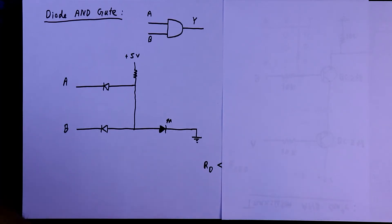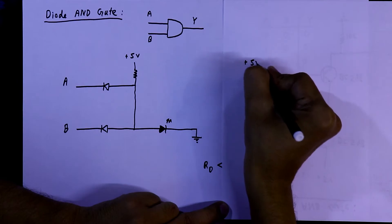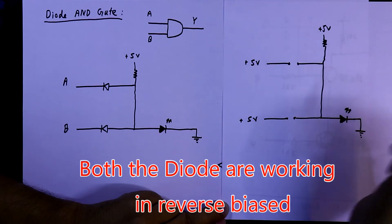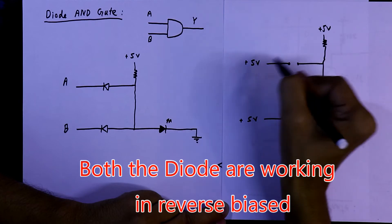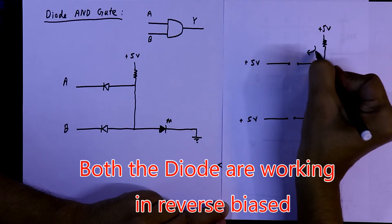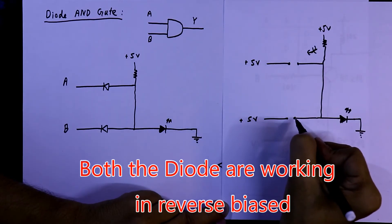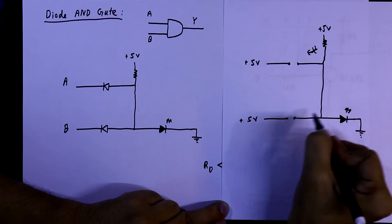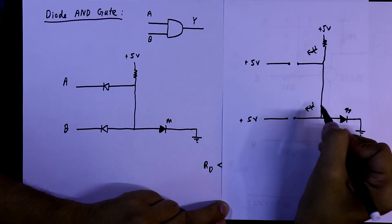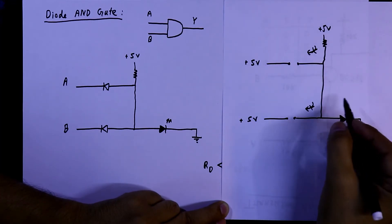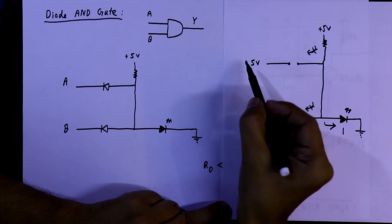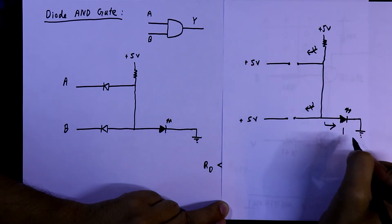For the fourth condition, both inputs are one, meaning plus 5 volts at both inputs. The potential difference across both diodes is zero, so current will not flow through either diode — both are working as open circuits. The only path for current is through the LED, so the LED turns on and we get the output. When both inputs are one, the output is one.